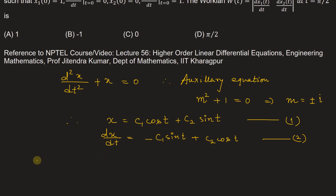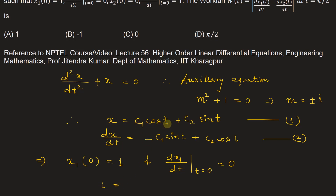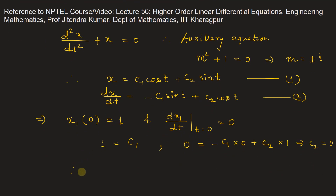Now, the initial conditions given for x1 are: x1(0) = 1 and dx1/dt at t=0 is 0. Substituting these into equation one: c1 = 1. Substituting into equation two: 0 = -c1·0 + c2·1, so c2 = 0. Therefore, x1 = cos(t). Let this be equation number three.